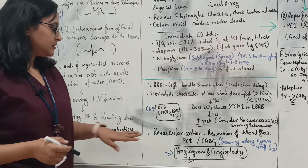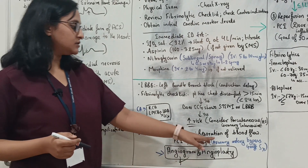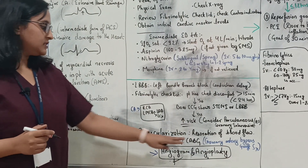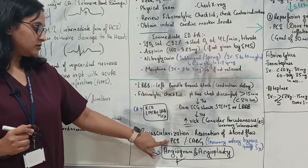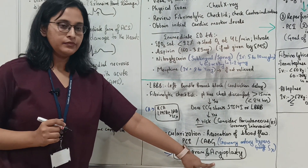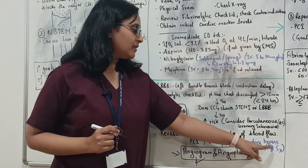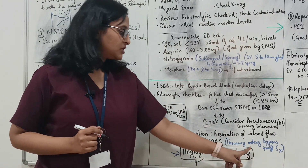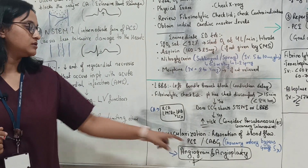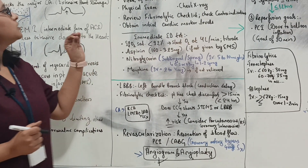Revascularization — restoration of blood flow — can be achieved via PCI, which is angioplasty (a non-surgical, invasive method), or CABG — coronary artery bypass graft surgery, which is a surgical method.